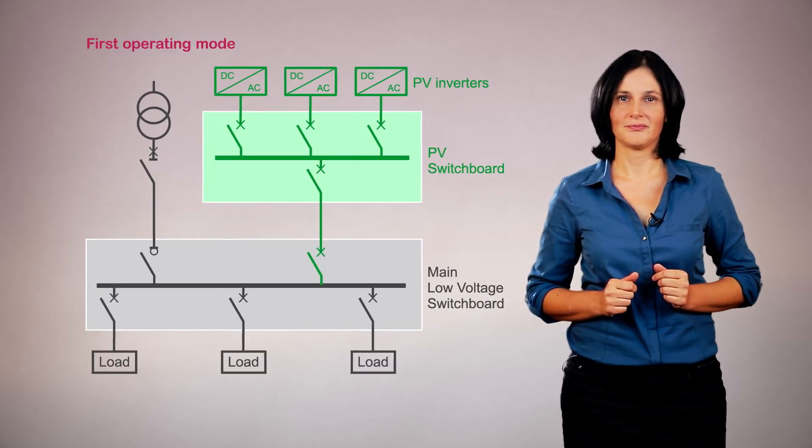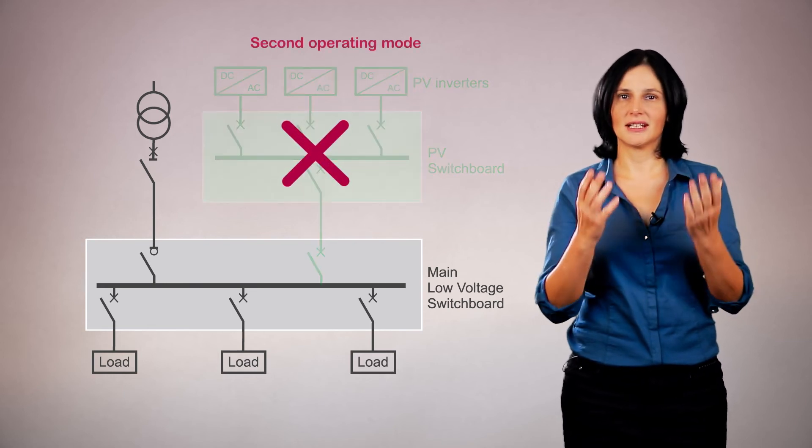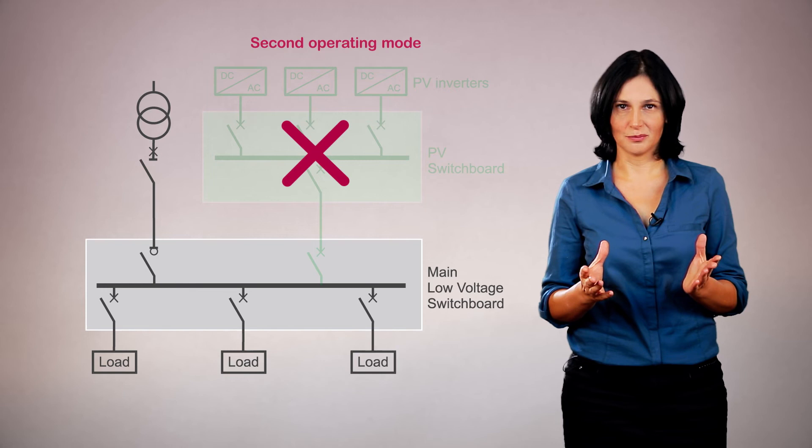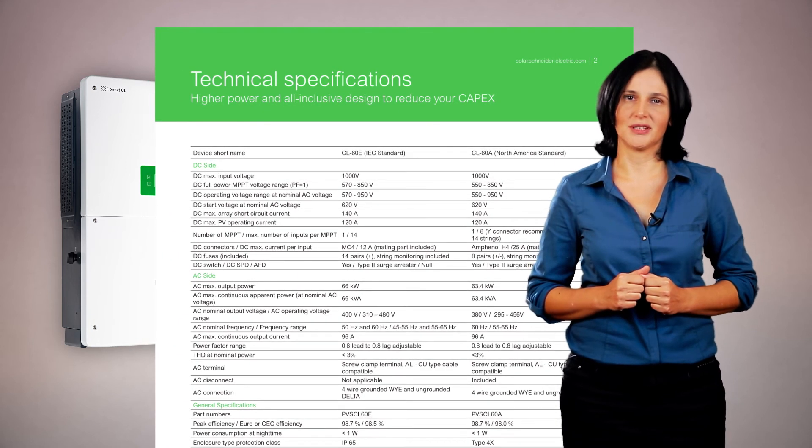To sum up, when adding photovoltaic production, there are two impacts on electrical calculations. Calculate power and current flow for each operating mode in order to size correctly the equipment and to set up the right protection plan. And calculate short-circuit currents by adding the photovoltaic contribution provided by the inverter manufacturer. Now that you know how to calculate electrical installations with photovoltaic self-consumption, learn more about how to size, protect and manage them. I will cover each of these topics in our next videos. Thank you for your attention and see you soon!